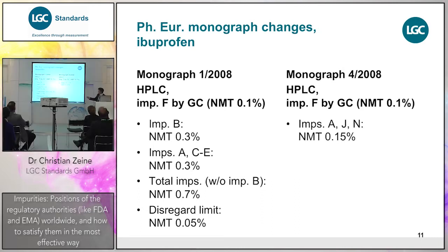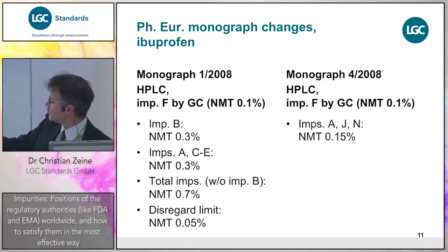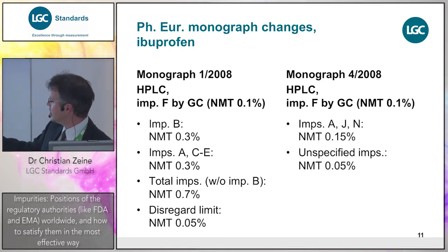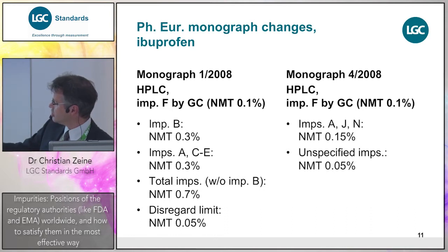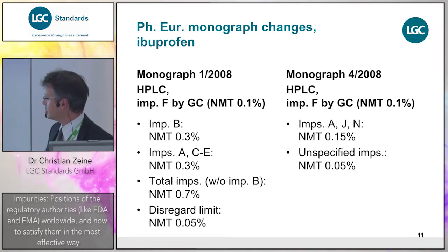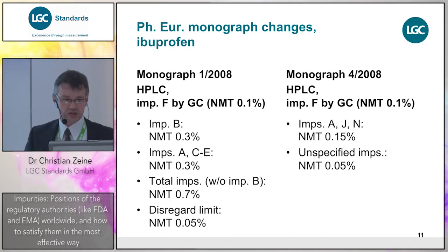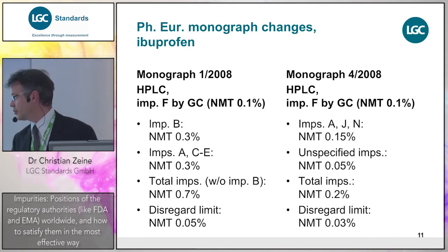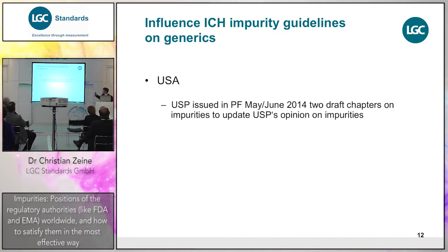For amlodipine, other unspecified impurities are at the identification threshold for substances administered not more than two grams a day, and total impurities are allowed up to 0.6%. The last example is ibuprofen. The specified impurities by HPLC are now just A, J, and N. There were significant changes — from 0.3% down to 0.15% for specified impurities, and unspecified impurities such as B, C, D, E changed from 0.3% to now only 0.05%. That is quite a change and explains why many CEPs were not extended or were withdrawn.